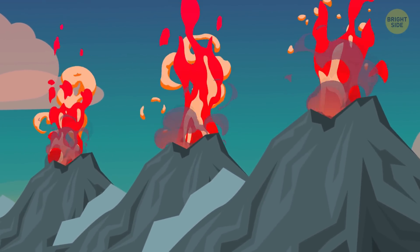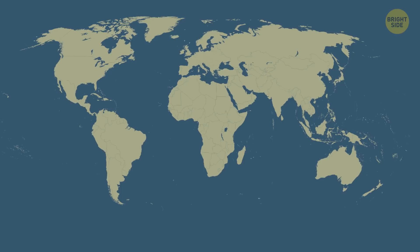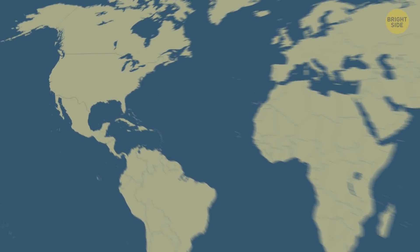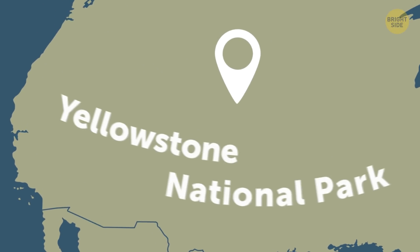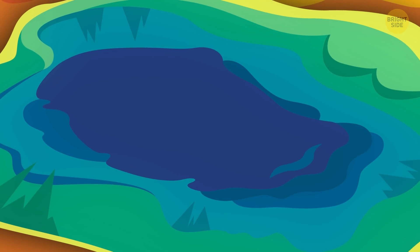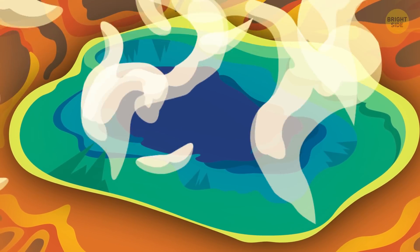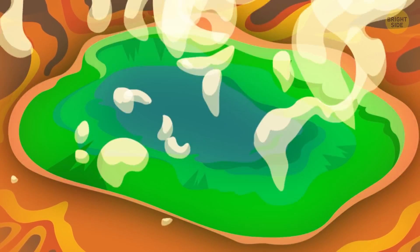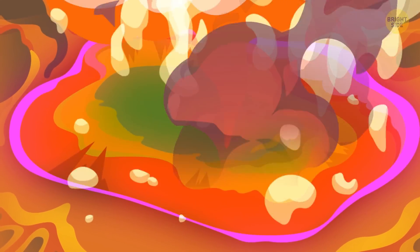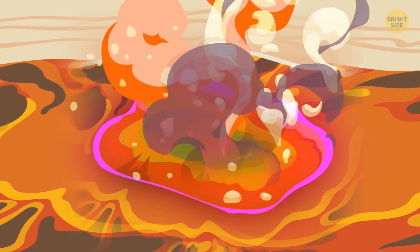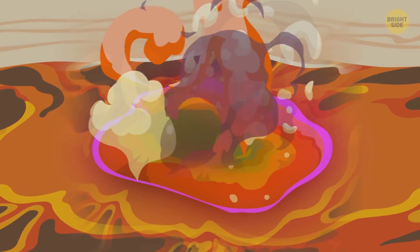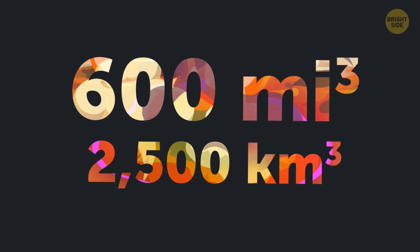But the age of supervolcanoes isn't over. The most infamous of them all is probably the one in Yellowstone National Park. This giant is responsible for at least 3 ginormous eruptions and who knows how many smaller ones. If this monster erupted anywhere as strong as it did 2.1 million years ago, it would spit out more than 600 cubic miles of red-hot stuff.